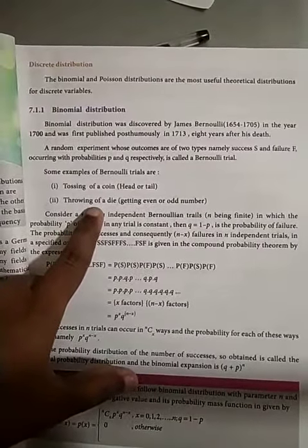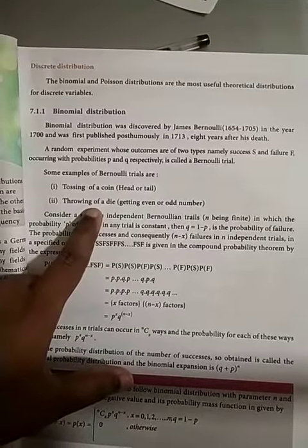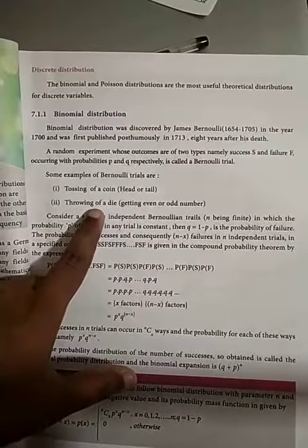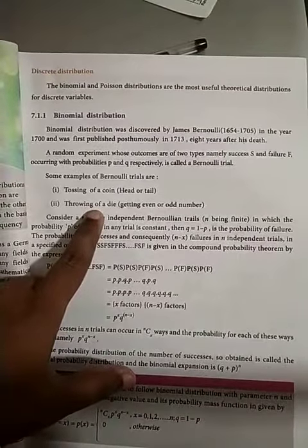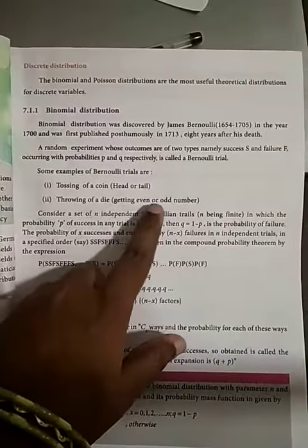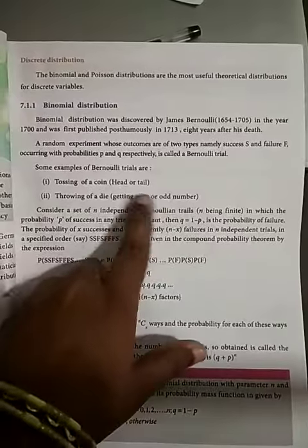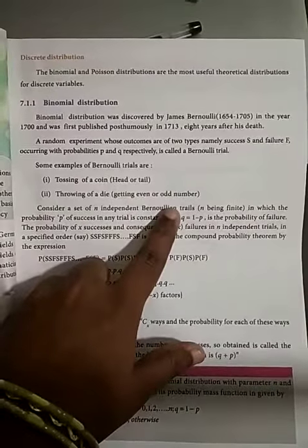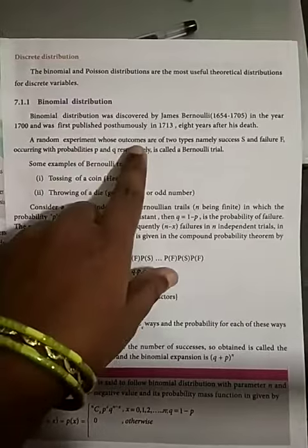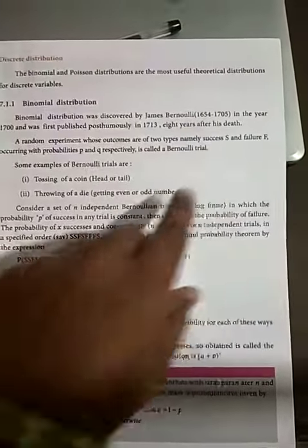When you toss a die, you can get 6 faces, but you cannot take all 6 as separate. You can say whether the number is even or odd — again only 2 conditions. So a random experiment whose outcomes are only 2 types, namely success or failure.